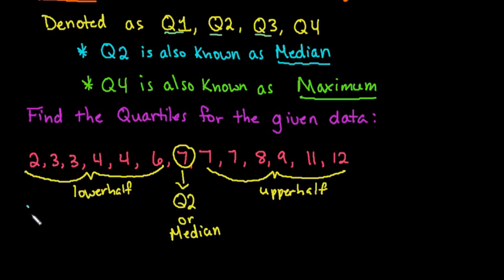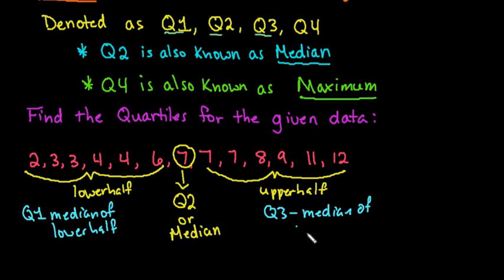Our Q1 is going to be the median of the lower half. And our Q3 is going to be the median of the upper half.